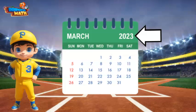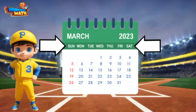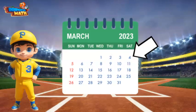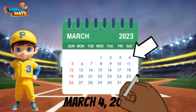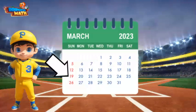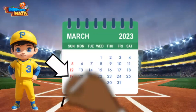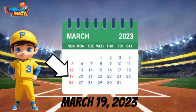The calendar also shows us each day of the week. The dates below those tell us the specific date. For example, the arrow is pointing to March 4, 2023 which is a Saturday. Let's look at another. This date is March 19, 2023 which is a Sunday.